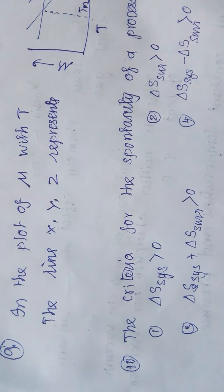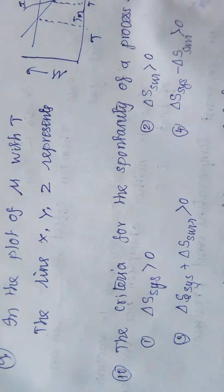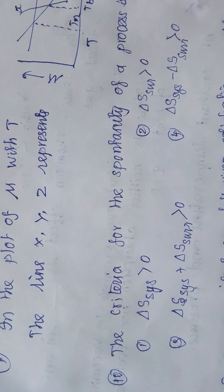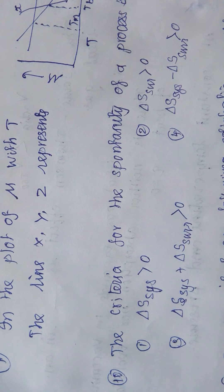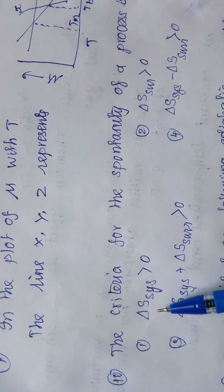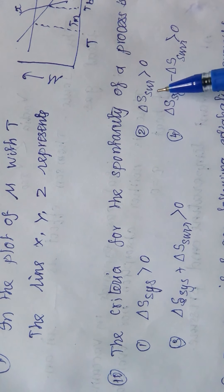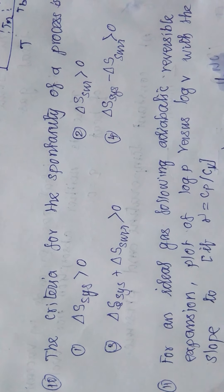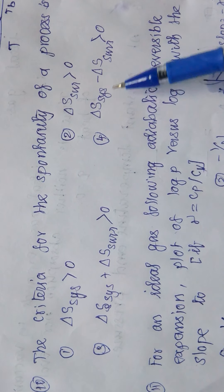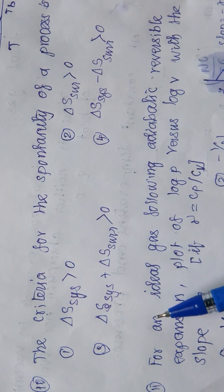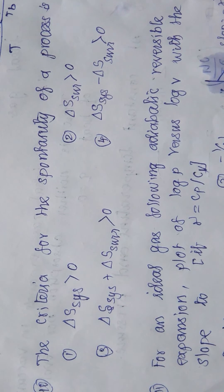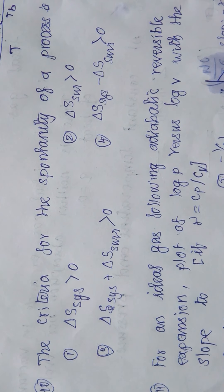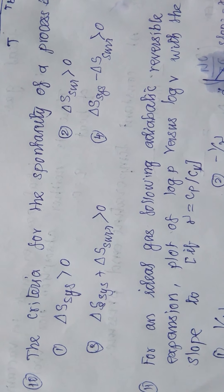The criteria for spontaneity of a process: in a spontaneous process, entropy is always increasing. ΔS_system > 0, ΔS_surroundings > 0, and ΔS_system + ΔS_surroundings > 0. Both the system and surrounding entropy must increase for a spontaneous process. This is the correct criterion.